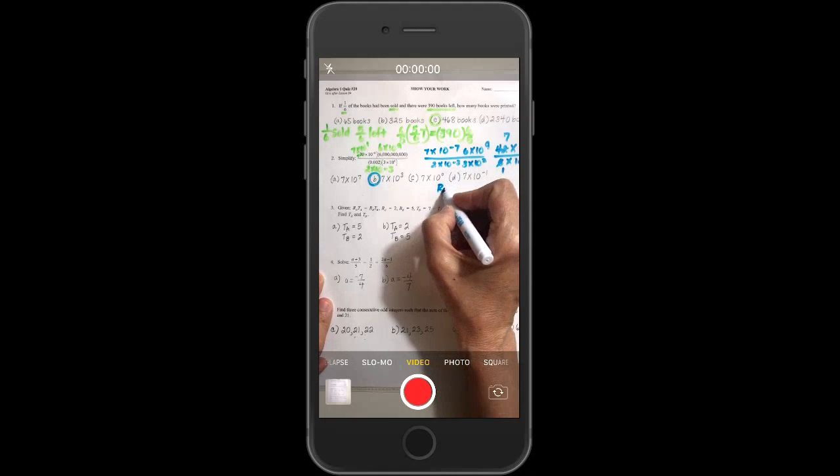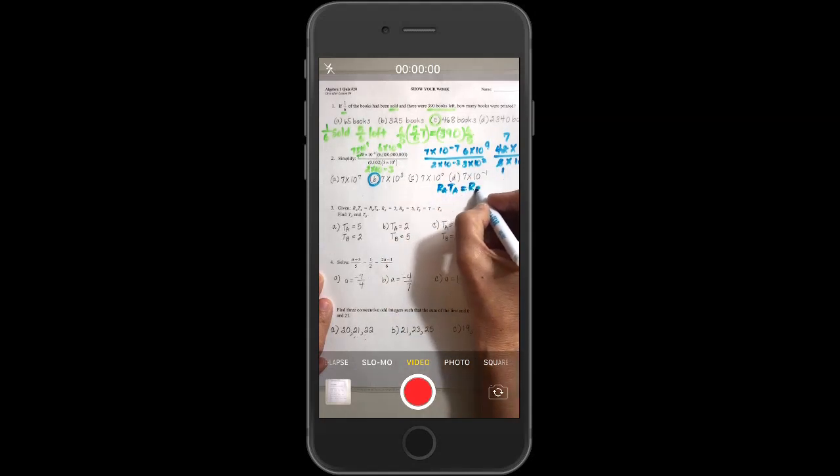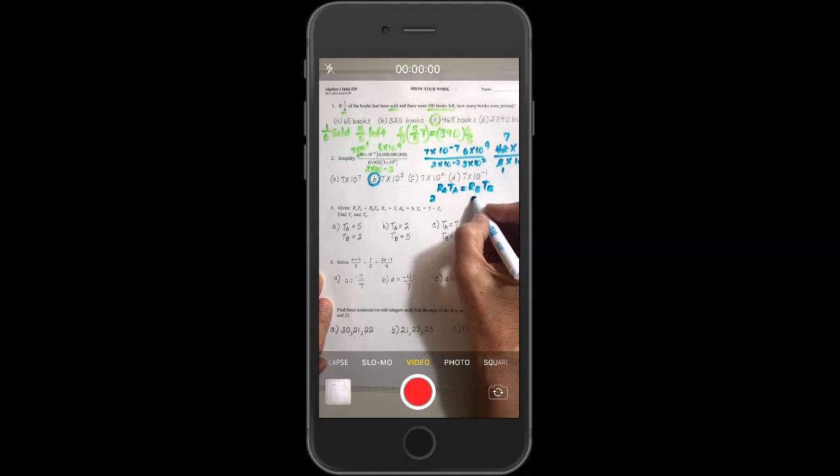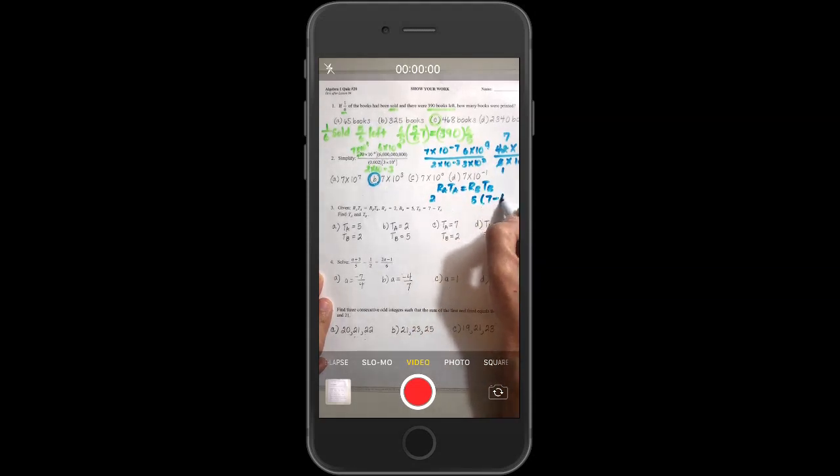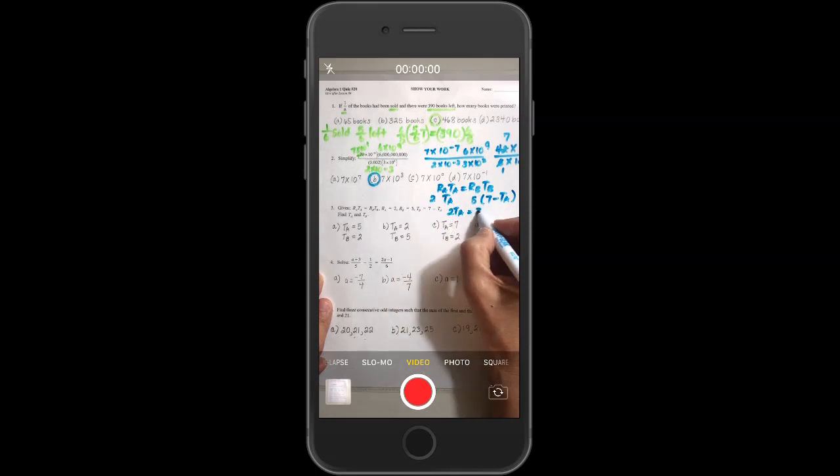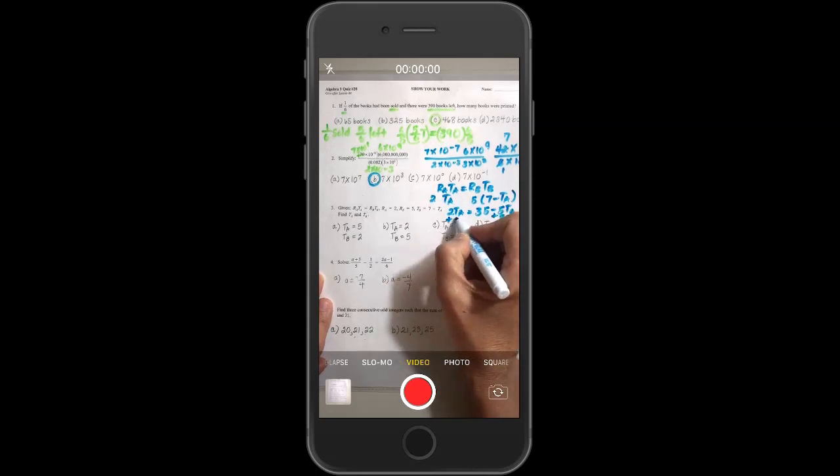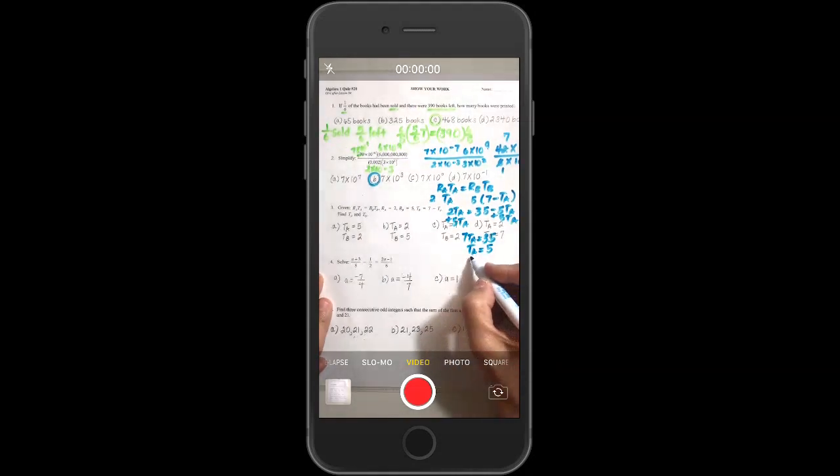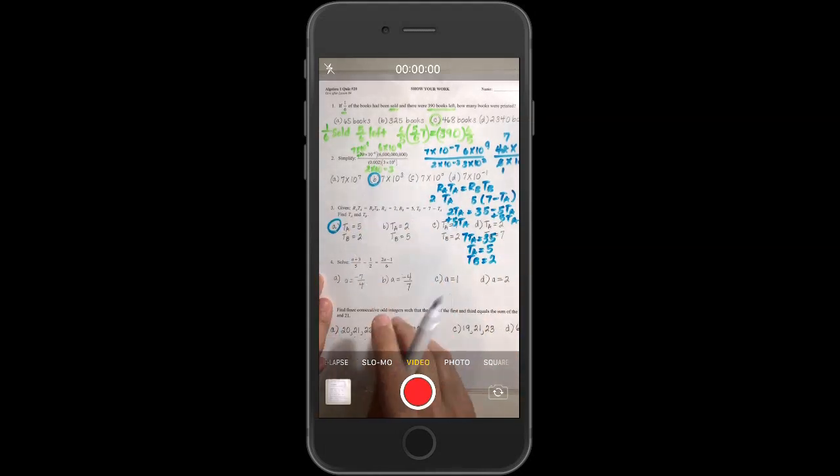If we go to this one, we have R_A T_A equals R_B T_B. And we simply substitute the values in, R_A is two, R_B is five, and T_B we substitute in seven minus T_A. So T_A just stays the same. So we have two T_A equals thirty-five minus five T_A. We move this to the other side. And therefore seven T_A equals thirty-five. And so T_A equals five. And T_B is seven minus T_A, so that makes T_B equal to two. And that is answer A.